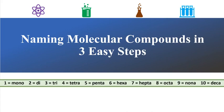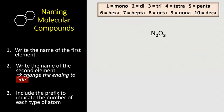Today we will learn how to name molecular compounds in three easy steps. The first example we're going to work with is N2O3.